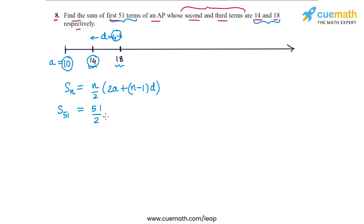S_51 equals 51 by 2 into 2A. A is 10, so 2A is 20 plus (n minus 1). N is 51, so n minus 1 is 50, into D which is 4.